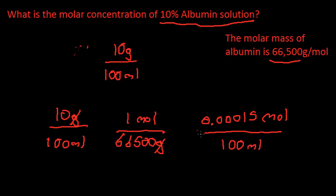We're not done yet. I mean, this is technically the answer, but it's proper to have it in terms of liters. So we multiply this entire thing, top and bottom, by 10. So this becomes, and I'll write it down here so I don't go off screen, 0.0015 moles per liter, per one liter. And that is the final answer.